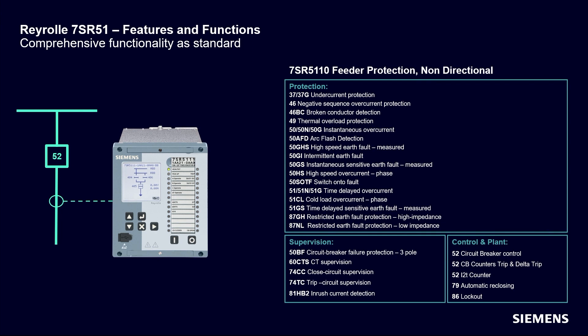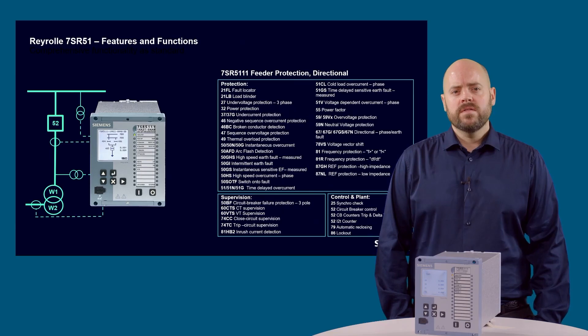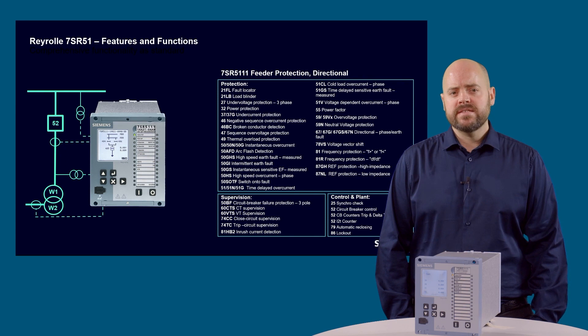High-speed, intermittent and sensitive earth fault protections 50GHS, 50GI and 50GS use a configurable automatic re-closing function 79, providing flexible independent automatic re-closing sequences for phase and earth faults to restore power flow after transient network faults. The device also has the option for direct arc flash detection inputs with high-speed tripping contacts for fast clearance when arc faults are detected, and temperature sensor inputs for connecting to sensors located in the plant.